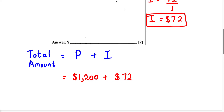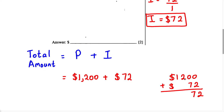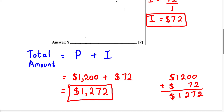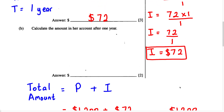When we set this up to solve: $1,200 plus $72. Working through the addition: 0 plus 2 is 2, 0 plus 7 is 7, 2 plus 0 is 2, and 1 plus 0 is 1. Therefore, the total amount Paula will receive after one year is $1,272. This is our answer for Part B.